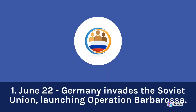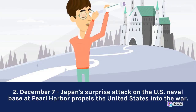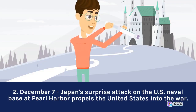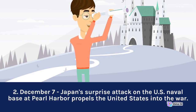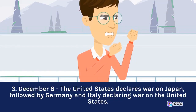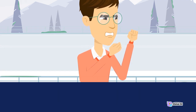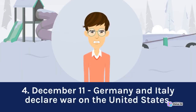1941: June 22, Germany invades the Soviet Union, launching Operation Barbarossa. December 7, Japan's surprise attack on the U.S. naval base at Pearl Harbor propels the United States into the war. December 8, the United States declares war on Japan, followed by Germany and Italy. December 11, Germany and Italy formally declare war on the United States.